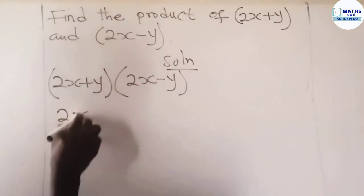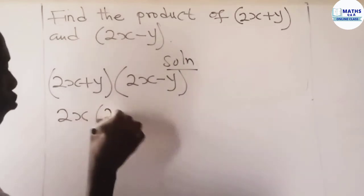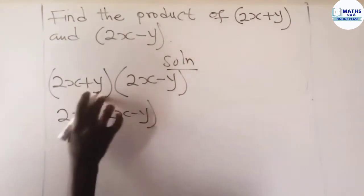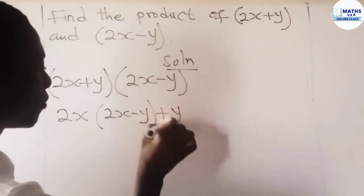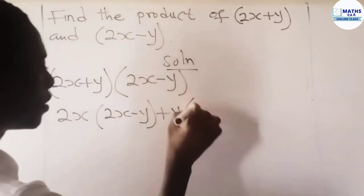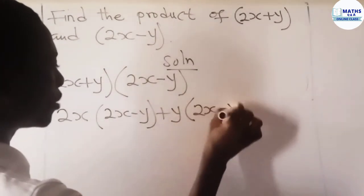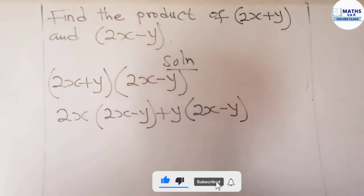We have 2x, which multiplies 2x minus y. And then we have this y, which is positive, that also multiplies 2x minus y.